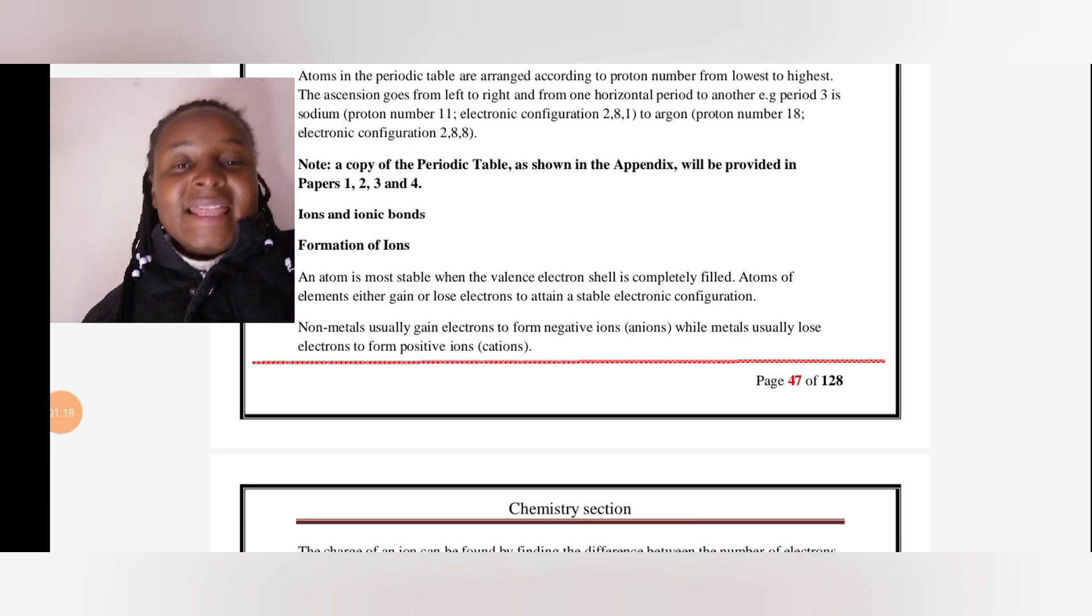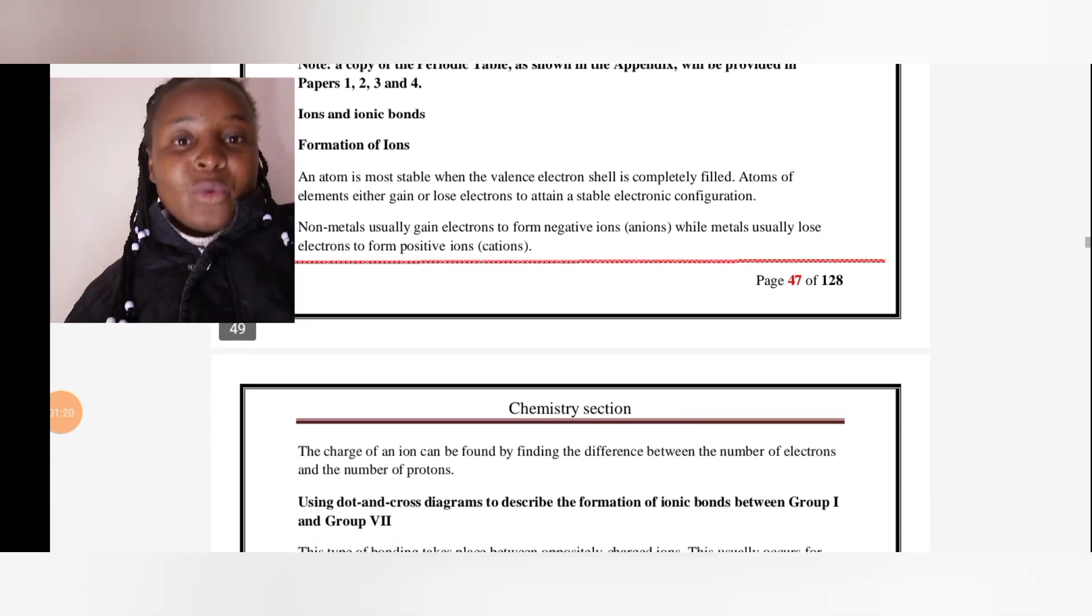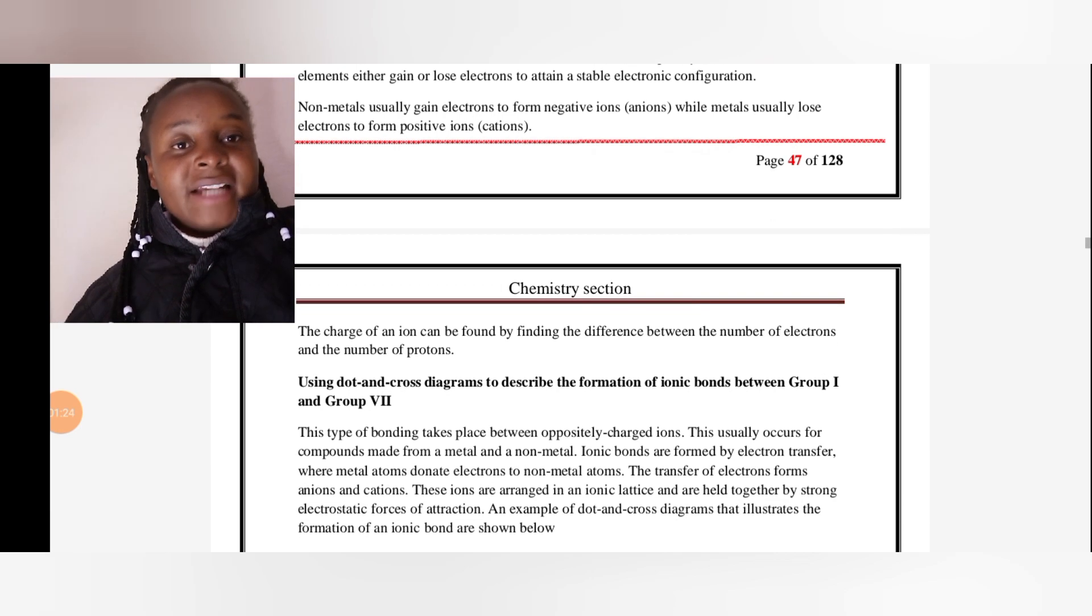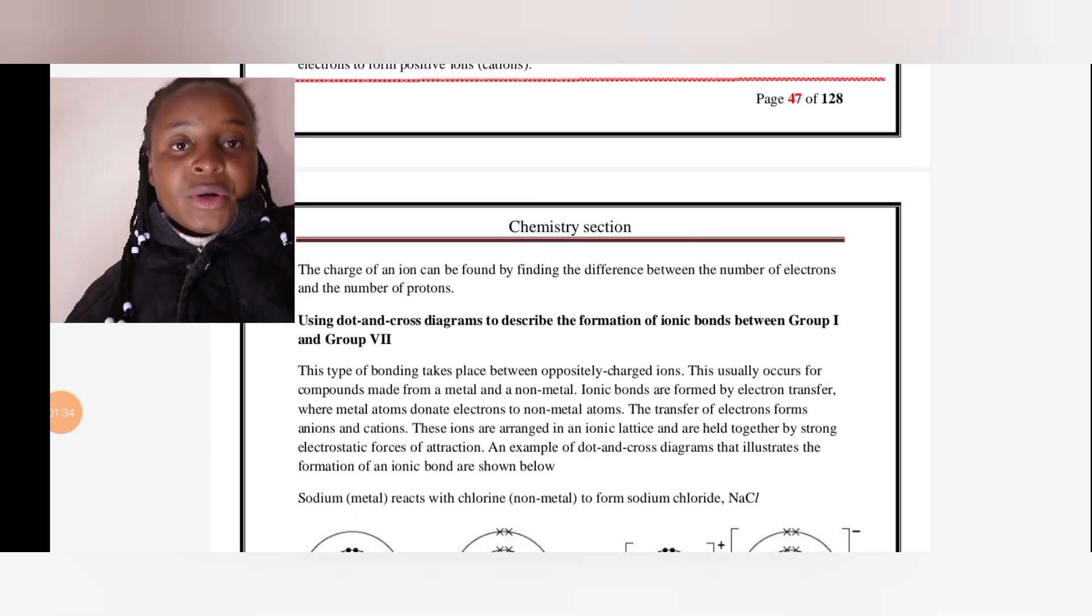The charge of an ion can be found by finding the difference between the number of electrons and the proton numbers. We should also be able to draw dot and cross diagrams to describe the formation of ionic bonds.